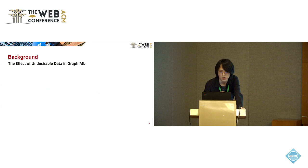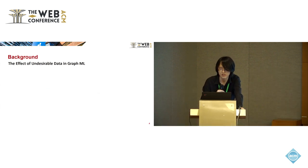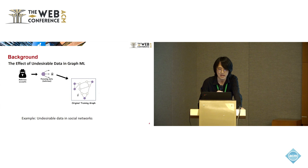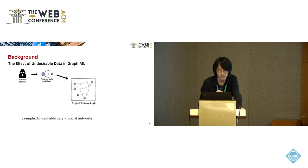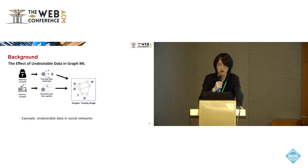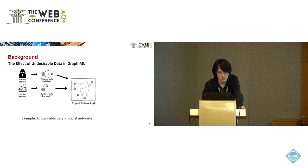Despite the previous success of graph machine learning models, concerns about the detrimental effects of undesirable data on these models are arising. In online social networks, sometimes there are malicious accounts that want to spread misleading information or conduct adversarial attacks to promote the influence of misleading information. Another example of undesirable data is inactive accounts. The prolonged inactivity of these accounts can make their social connections no longer reliable, and this may degrade the performance of graph machine learning models trained on this bad data.